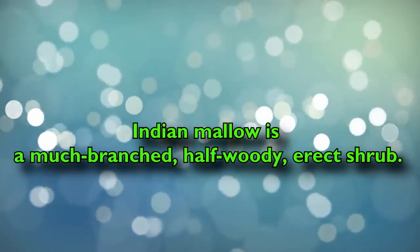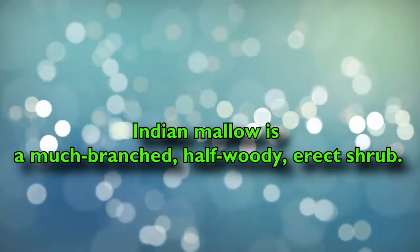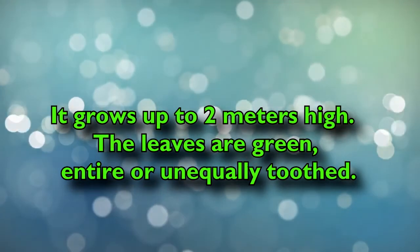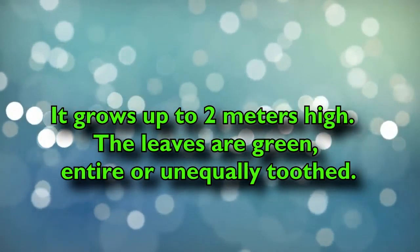Indian Mallow is a much-branched, half-woody, erect shrub. It grows up to 2 meters high. The leaves are green, entire, or unequally toothed.